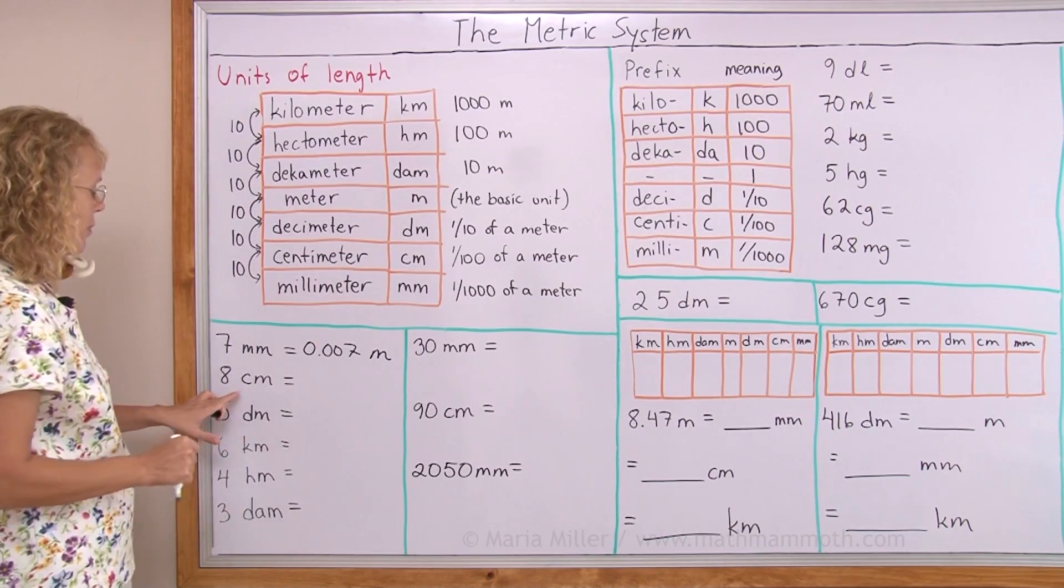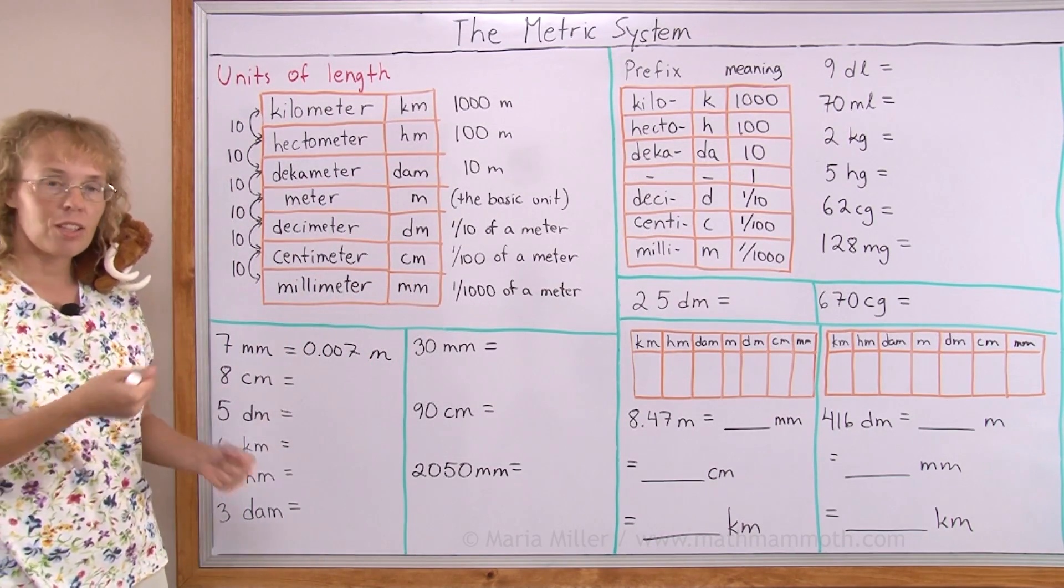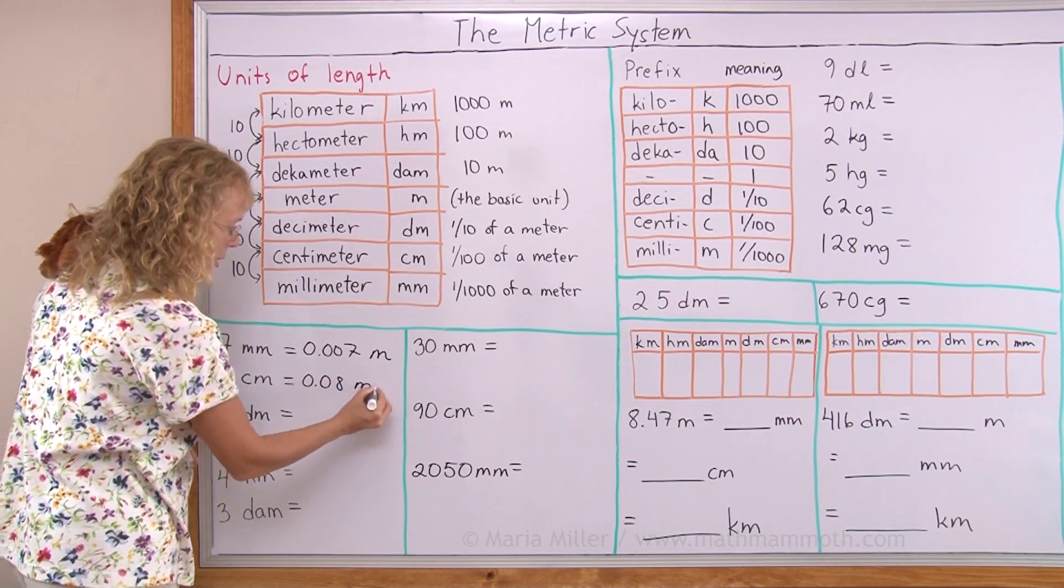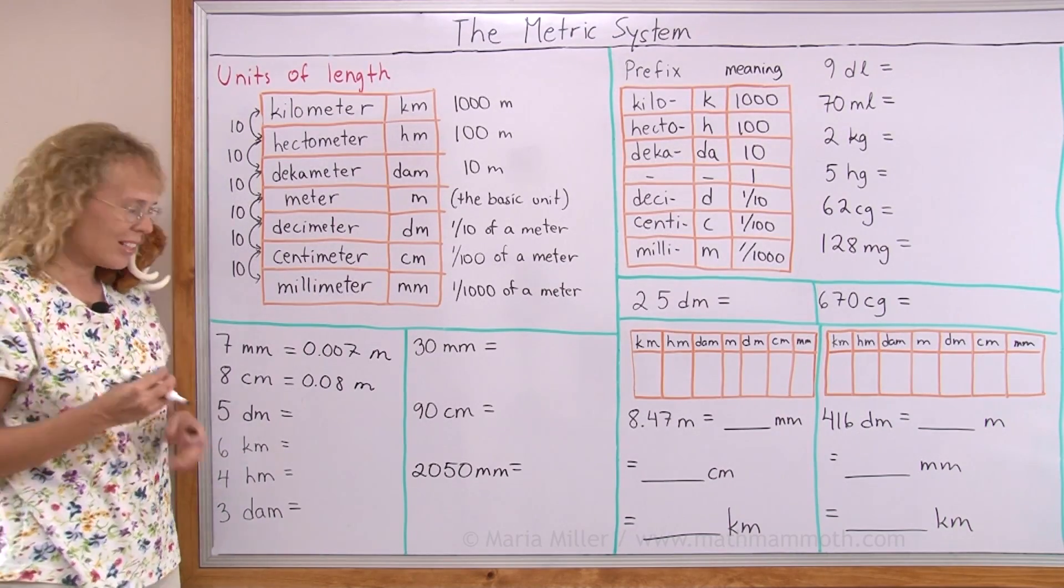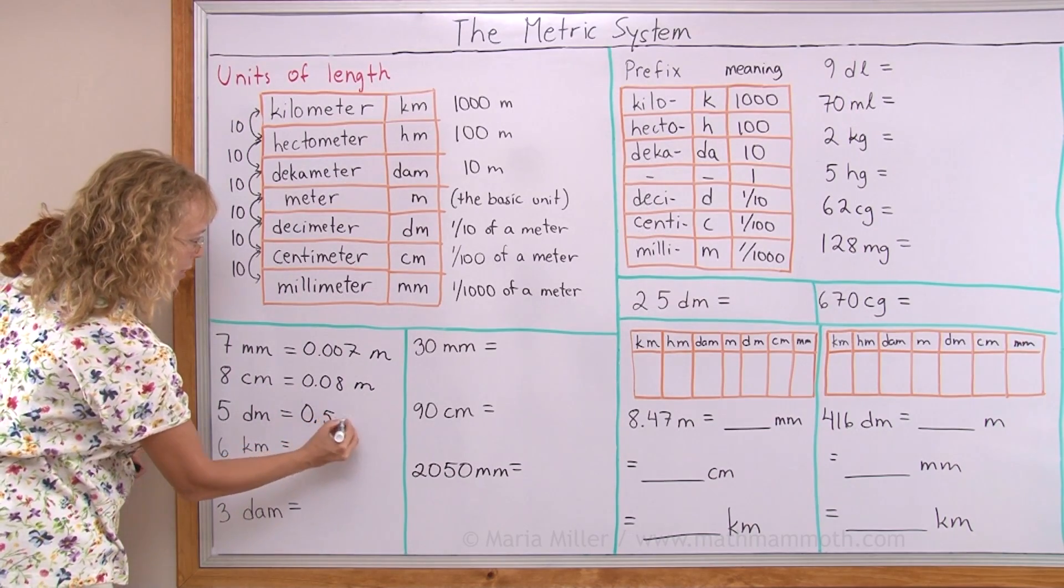Eight centimeters, centi means one-hundredth, so here we have eight-hundredths of a meter, so we write here the decimal, 0.08 meters. Five decimeters, deci means one-tenth, so here we have five-tenths, 0.5 meters.